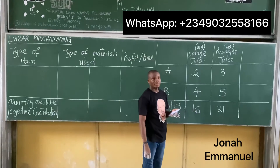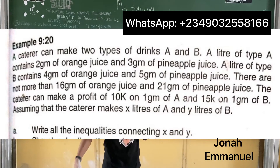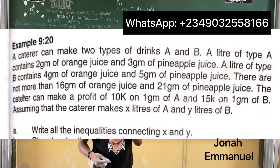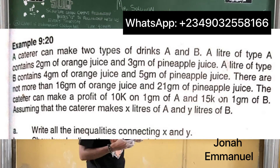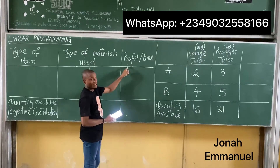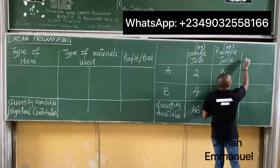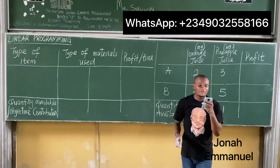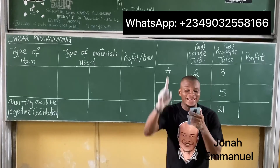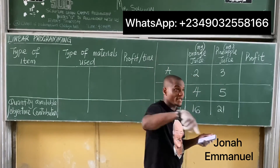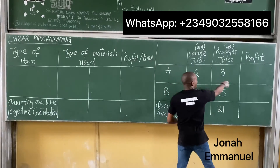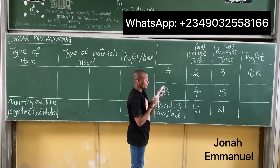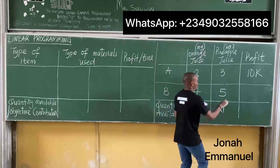Next, the food vendor can make a profit. Profit goes here. The food vendor makes a profit of 10K for type A and 15K for type B.